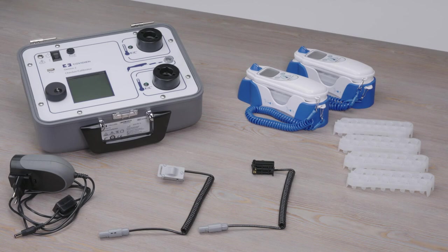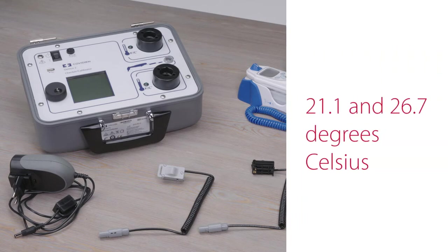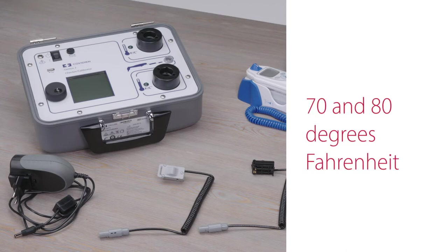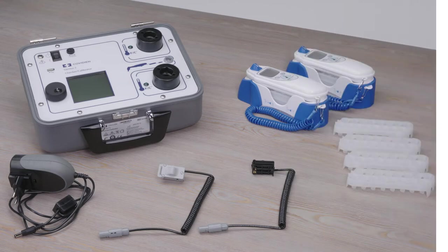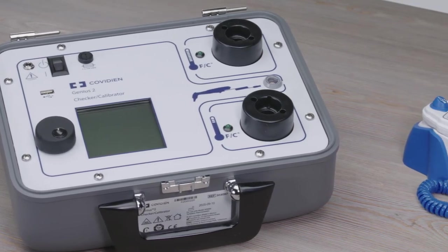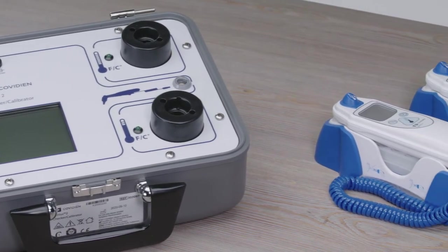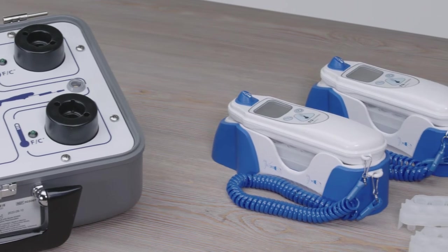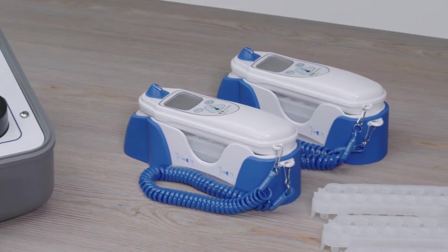Now, let's get started. First, make sure that the checker-calibrator device is set up in a room with a stable ambient temperature that is between 21.1 and 26.7 degrees Celsius, or 70 and 80 degrees Fahrenheit, and that the workspace is not in direct line of an air conditioning vent or open door. You'll also want to ensure that the checker-calibrator, thermometers, and the probe covers all acclimate to this temperature range before beginning.